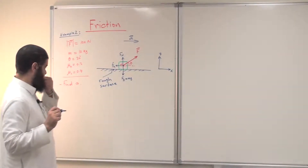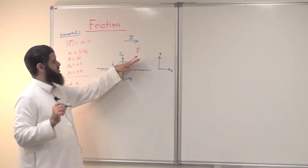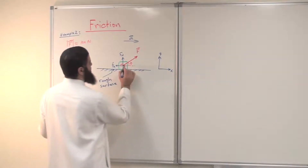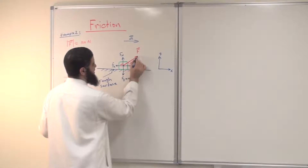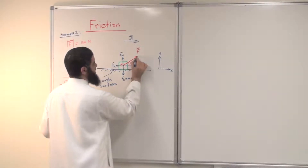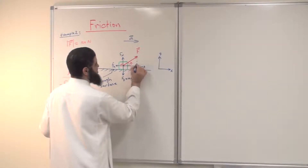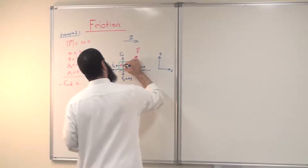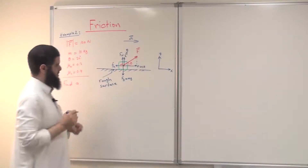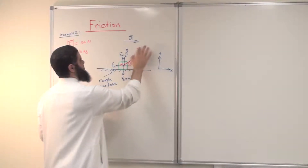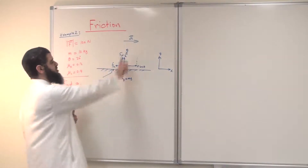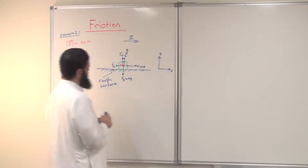The applied force is not along the x or y axis, so I need to decompose it. The x component is adjacent to angle theta, giving f cosine theta. The y component is opposite to theta, giving f sine theta. Now I can replace the original force f with its two components: f cosine theta along x and f sine theta along y.